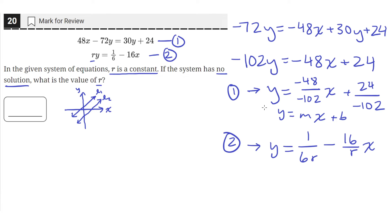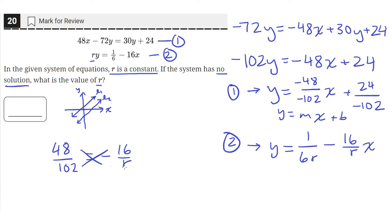In order for these two equations to have no solution, they need to be parallel, which means the slopes need to be the same. The slope of the first equation is 48 over 102 — the negative divided by negative is just positive. That needs to equal the slope of the second equation, which is negative 16 over r. So now we can solve for r by cross-multiplying: 48r equals negative 16 times 102.